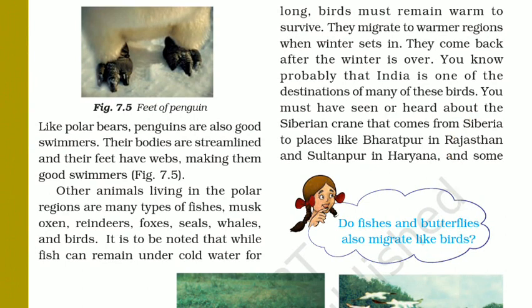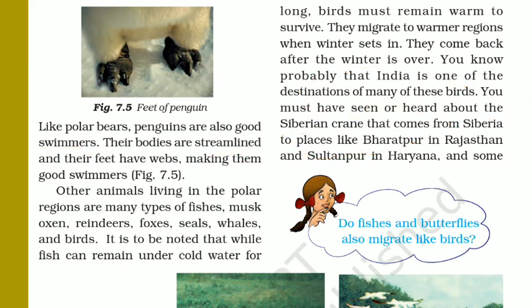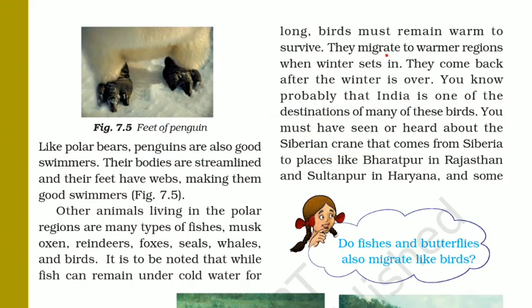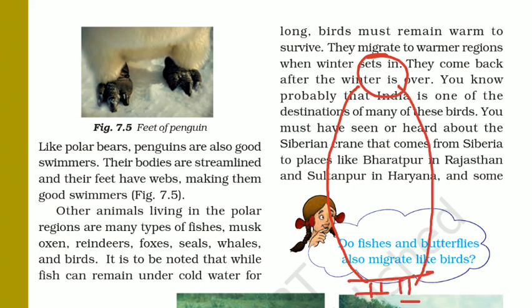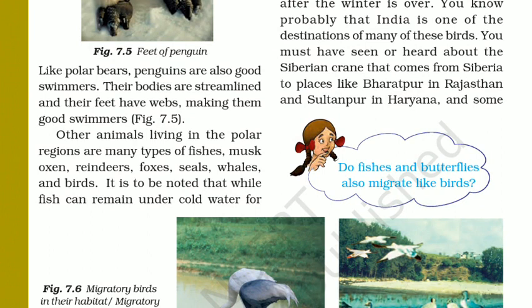What helps them to swim very fast? Their large claws. Similarly, penguins and polar bears have very thick claws which help them to be good swimmers. The body of the penguin is streamlined — similar to what you have read about fish. Because of the streamlined body they can move efficiently. You can easily see in the picture how the penguin has a streamlined body, which makes it a very good swimmer.